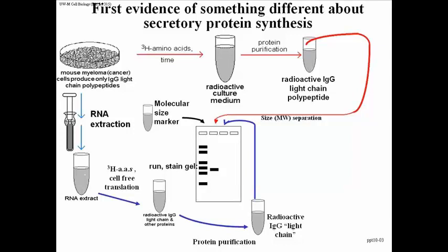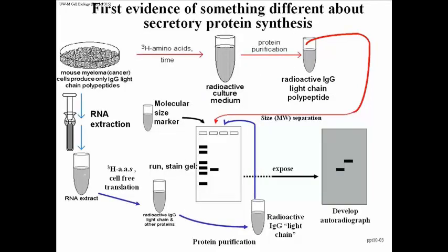After running and staining the gel, we see the markers and the IgG from the culture — the cells produced plenty of IgG by staining. We won't see anything in the third lane by staining because not enough IgG was made in cell-free translation to be detected that way. To detect the radioactive cell-free product, we place a piece of film on top of the gel, expose it, and develop the autoradiograph. Wherever there was radioactivity, a band appears. Two bands are visible: the radioactive IgG from the cells aligns exactly with the stained IgG band in lane 2.